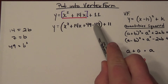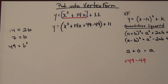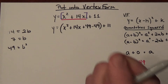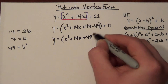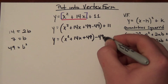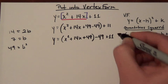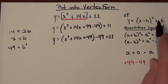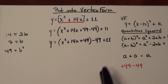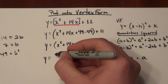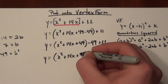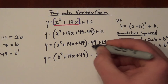Now I've got to get this negative 49 out of the group. How do we get something out of a group? We apply the distributive property. Out in front of these parentheses there's nothing, but whenever you have nothing in front of parentheses, there's always a hidden 1. So I distribute that 1 to the negative 49, which removes it from the parentheses. This becomes y equals the quantity of x squared plus 14x plus 49, then minus 49 plus 11, which simplifies to minus 38.